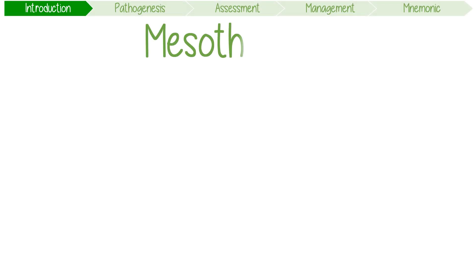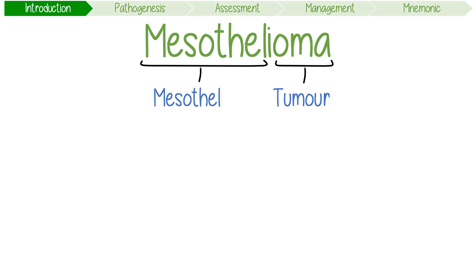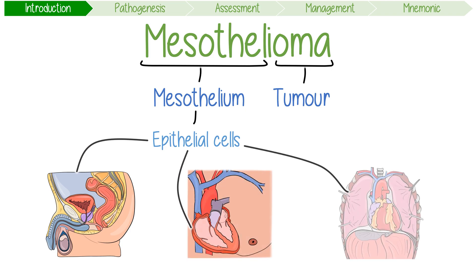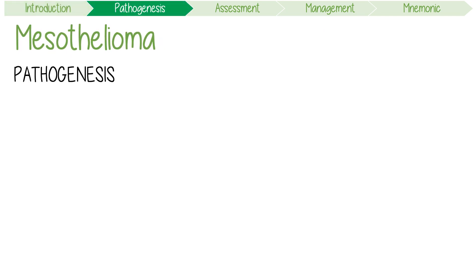If you break down the word mesothelioma, it means a tumour of the mesothelium, which is a membrane of epithelial cells that lines the body cavities, forming the peritoneum, pericardium, and the thoracic pleura. This malignancy is highly lethal, usually associated with asbestos exposure, and it typically occurs in the pleura of the lungs. Let's break down its pathogenesis.